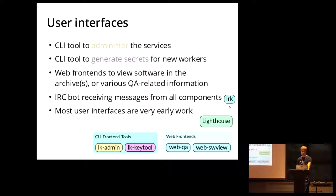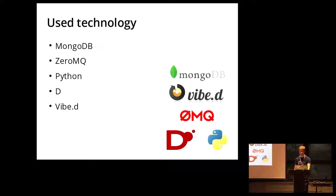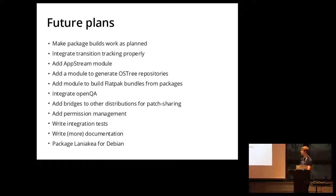In general, these things are really easy to set up and are self-assembling because they communicate via the database or via ZeroMQ in order to pass messages amongst each other. So as soon as you have one module and connect it to the central instance, it will immediately detect the other modules and work with them. The technology used is basically boring except for the fact that we use a D programming language for most things and Python for the rest, and also MongoDB at the moment — though I'm pretty sure that will change. First priority for future plans is to make package build work properly and integrate the transition tracking module, and basically write a lot more modules to perform more tasks in Laniakea.